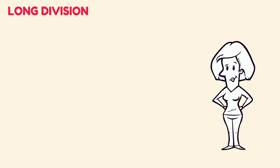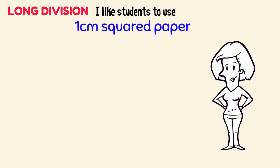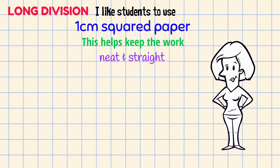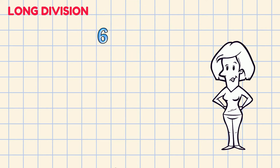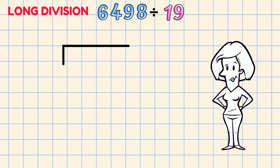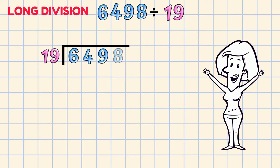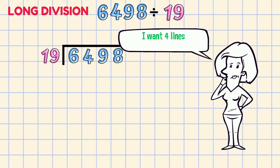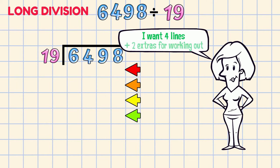For LONG DIVISION I like students to use 1cm² paper like you get in math exercise books. This helps keep the work neat and straight. Here's the problem we're going to do. Set it out just like a short division problem. 1 digit per square. The dividend has 4 digits so I want 4 lines plus 2 extras for working out. LONG DIVISION NEEDS A LONG WORK SPACE!